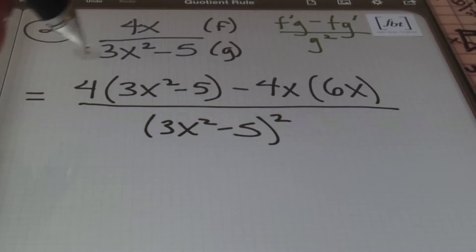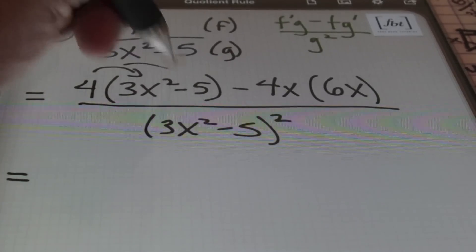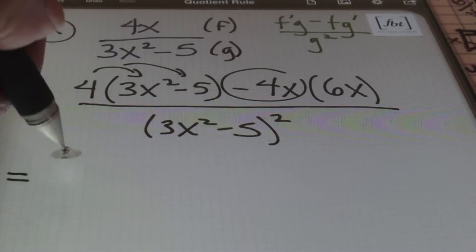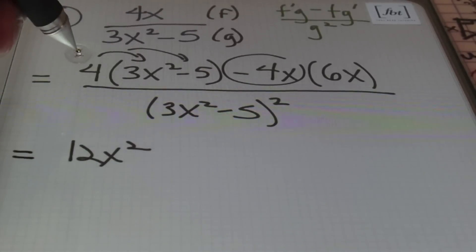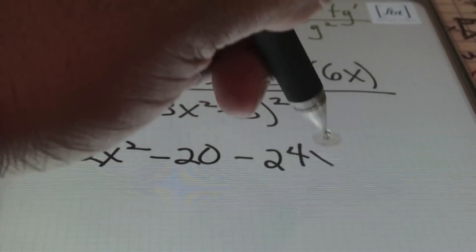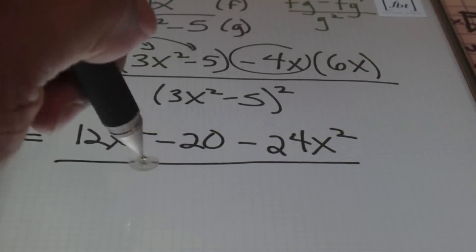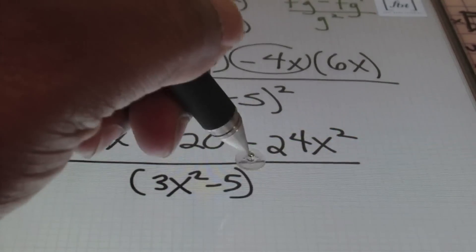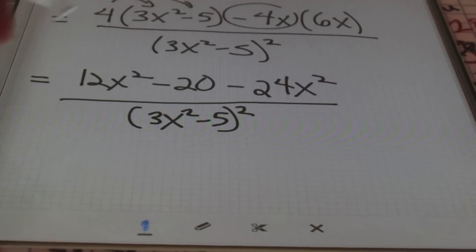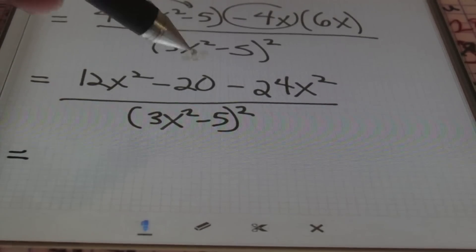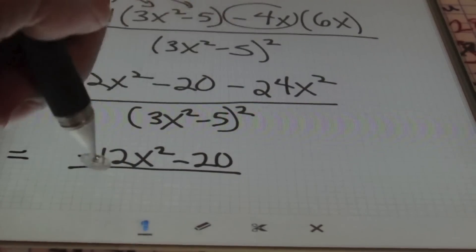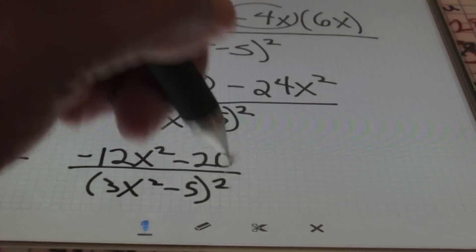From here I'm going to distribute in the numerator and multiply everything out. So 4 times 3x squared gives me 12x squared, and 4 times negative 5 is negative 20. Then negative 4x times 6x is negative 24x squared. All of this is over the denominator squared, which is (3x squared minus 5) squared. Most of the time you can leave your denominator as is without carrying out multiplication. In the numerator, combining like terms: 12x squared minus 24x squared gives me negative 12x squared minus 20, all over (3x squared minus 5) squared.